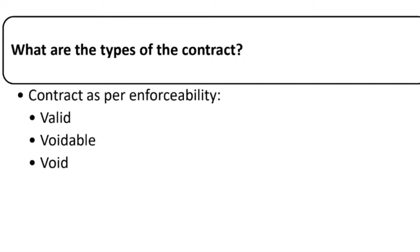Now let us talk about the types of contract. As per enforceability, there are three types of contract: valid contract, voidable contract, and void contract.